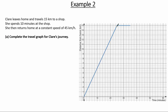In the first stage, the distance increases linearly up to 15 kilometers, corresponding to Claire leaving home and travelling to the shop. In the second stage there is no distance covered, so Claire is stationary — she is waiting. The waiting period starts at minute 25 and ends at minute 35, which is 10 minutes, corresponding to her spending 10 minutes at the shop.